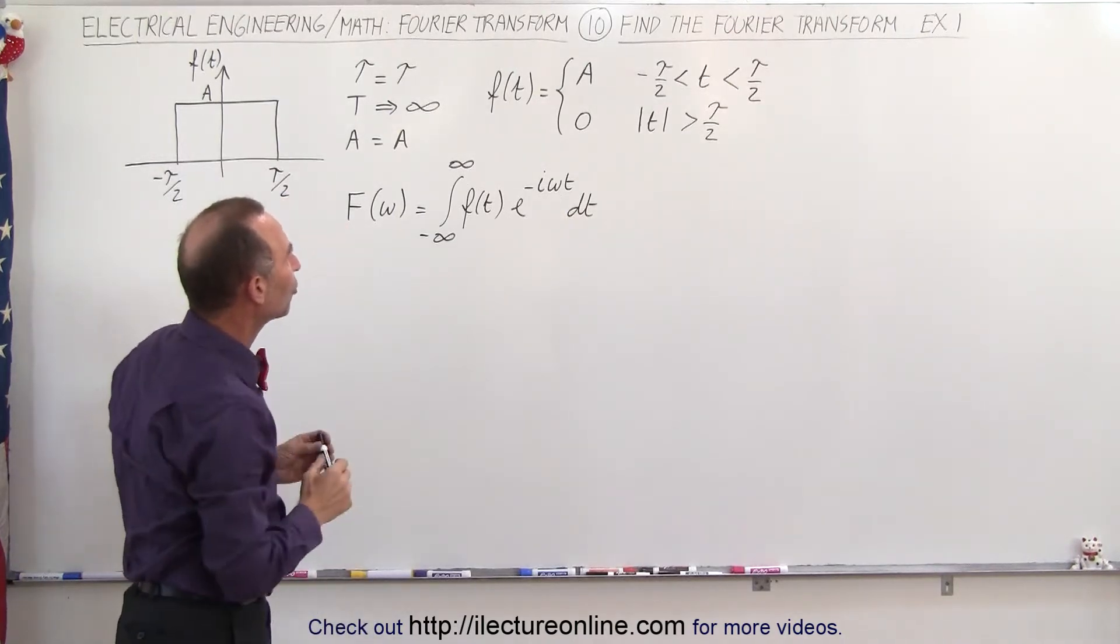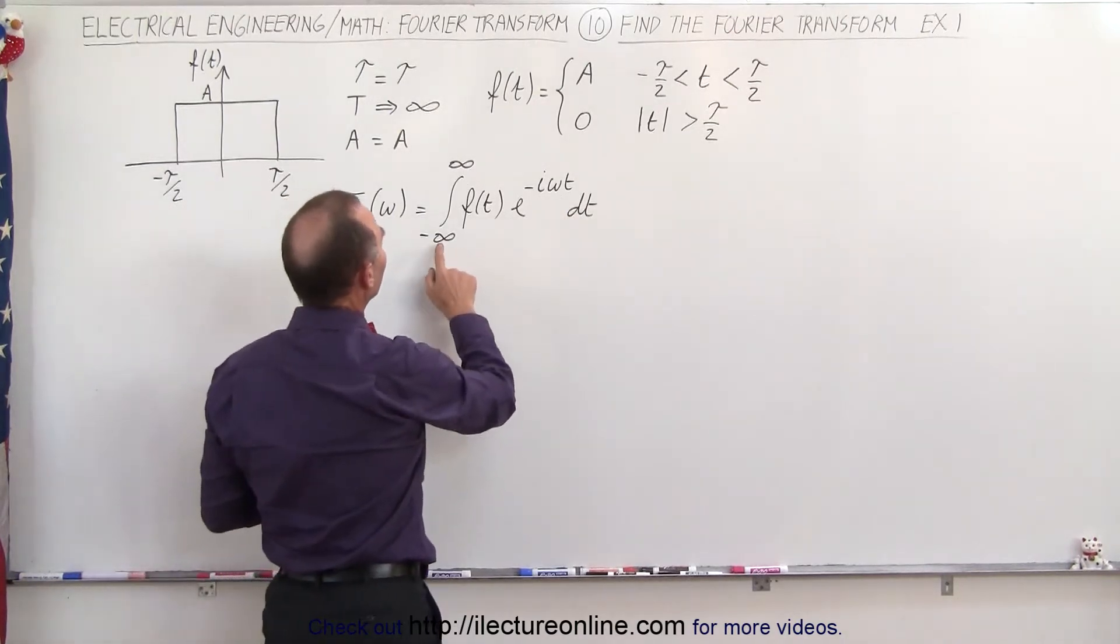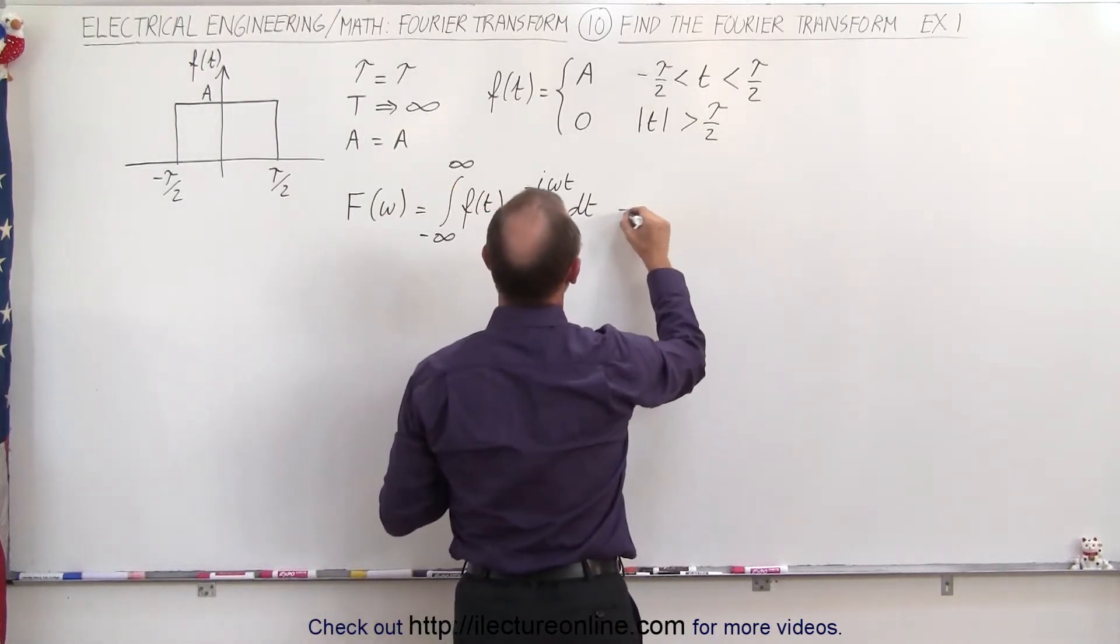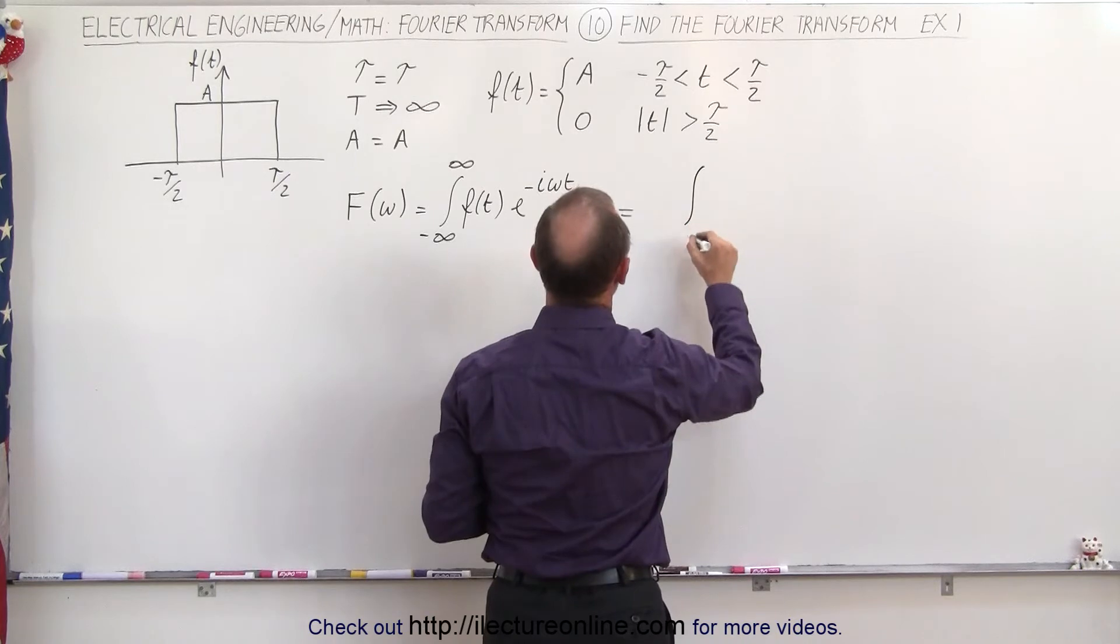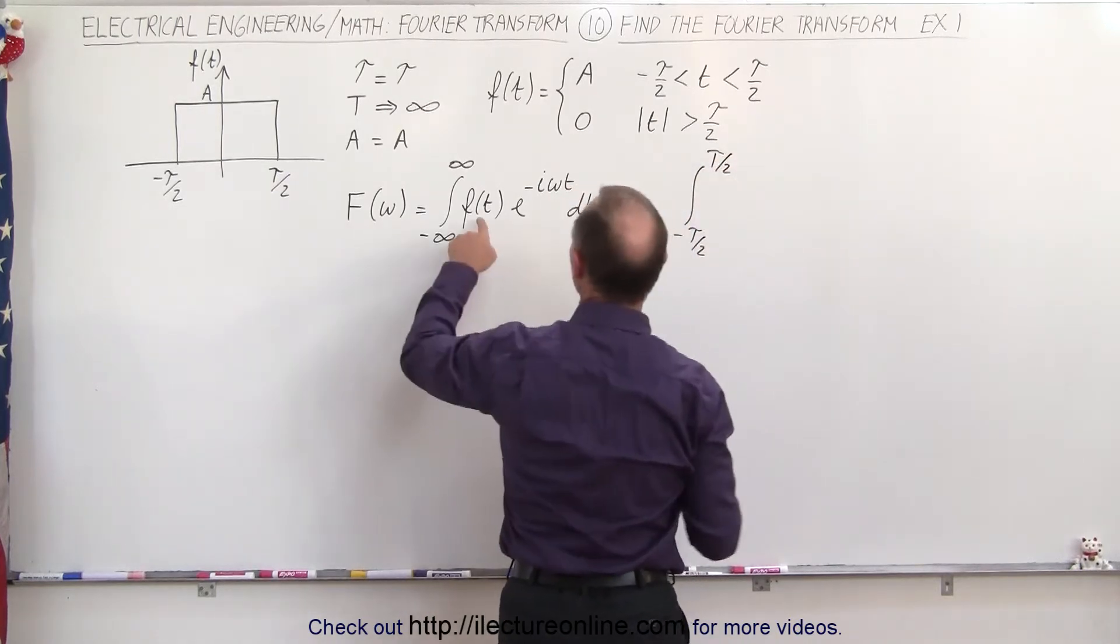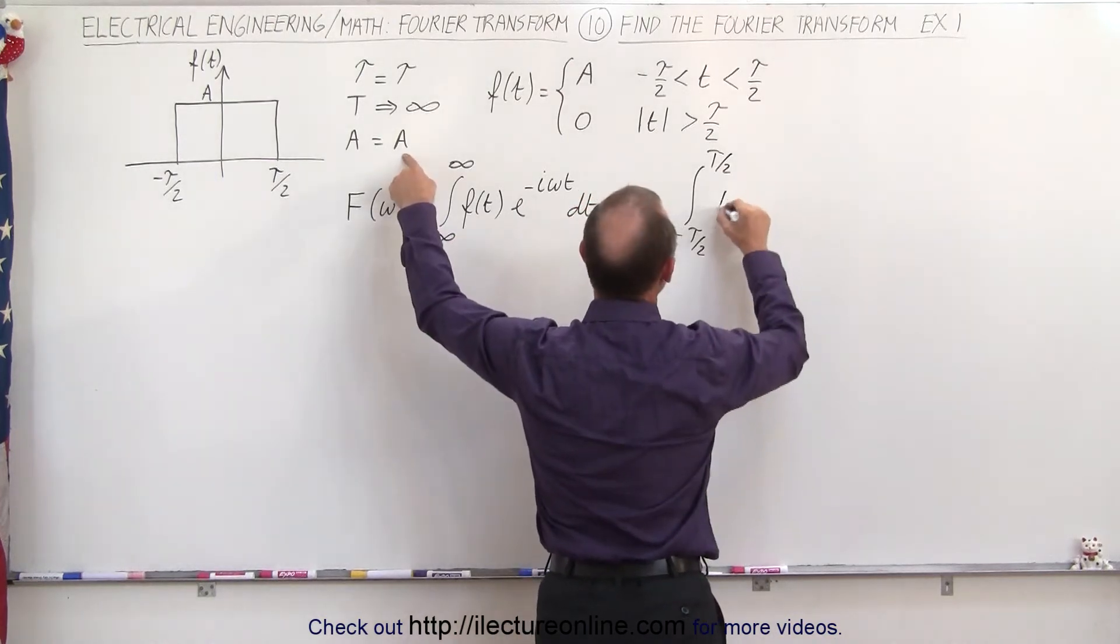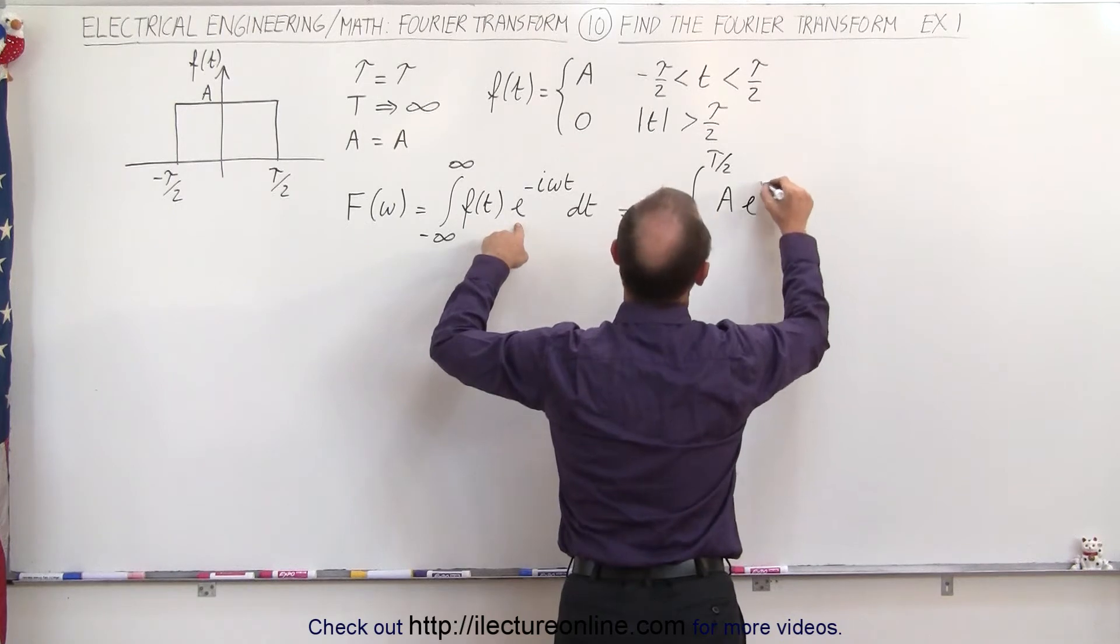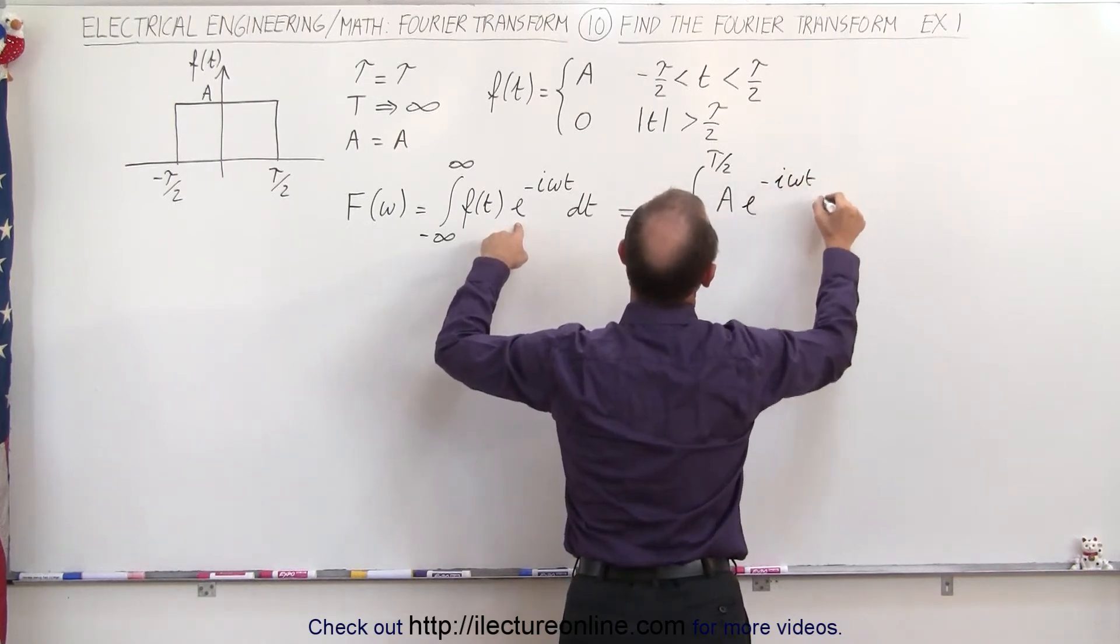When we plug in what that function is for the values from minus tau over 2 to tau over 2, this integral becomes the following: integral from minus tau over 2 to tau over 2 of f of t, which is the constant A between those two values, times e to the minus i omega t times dt.